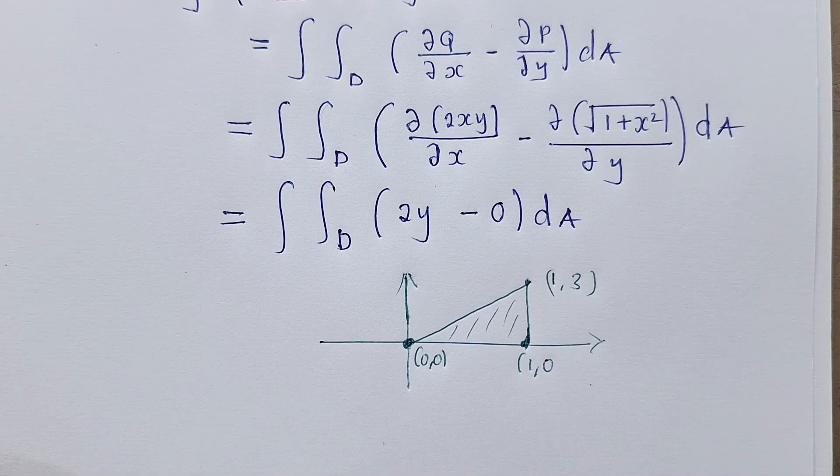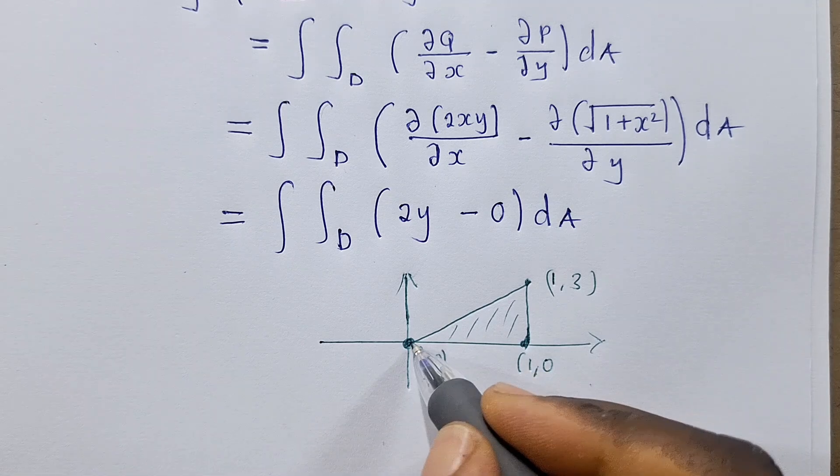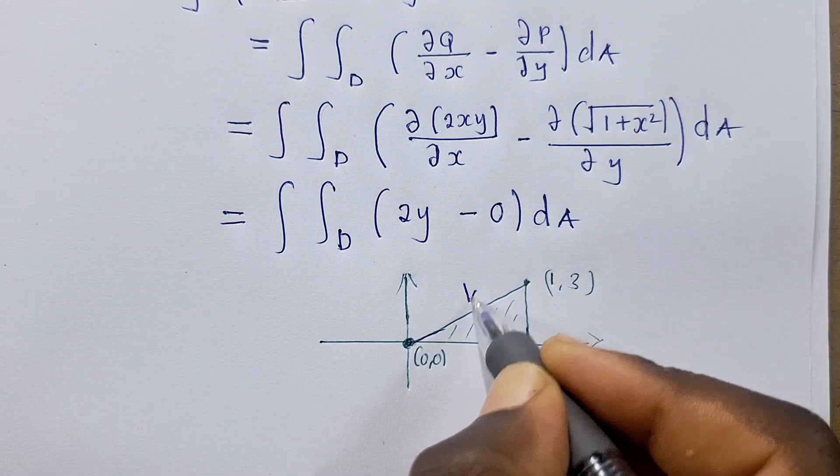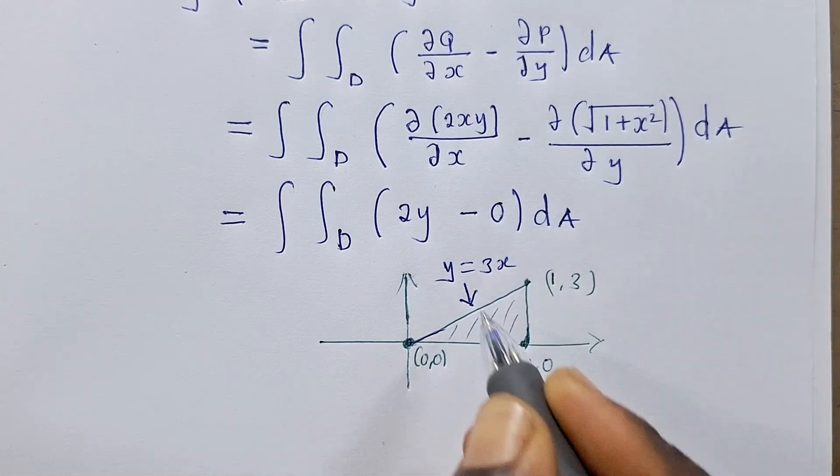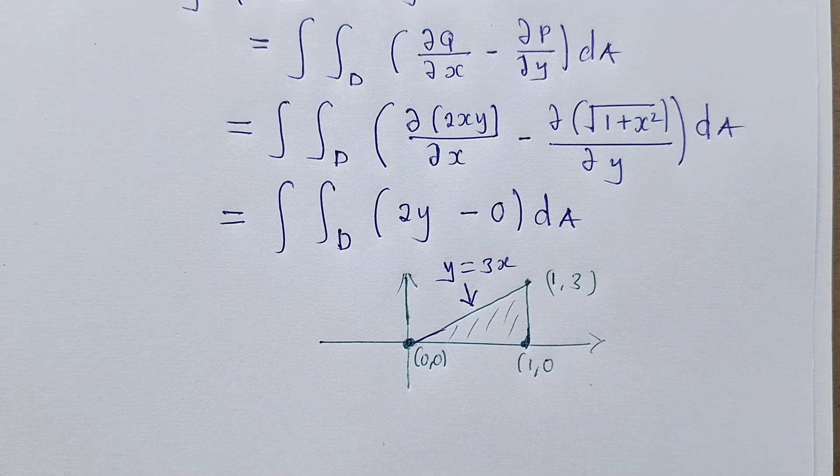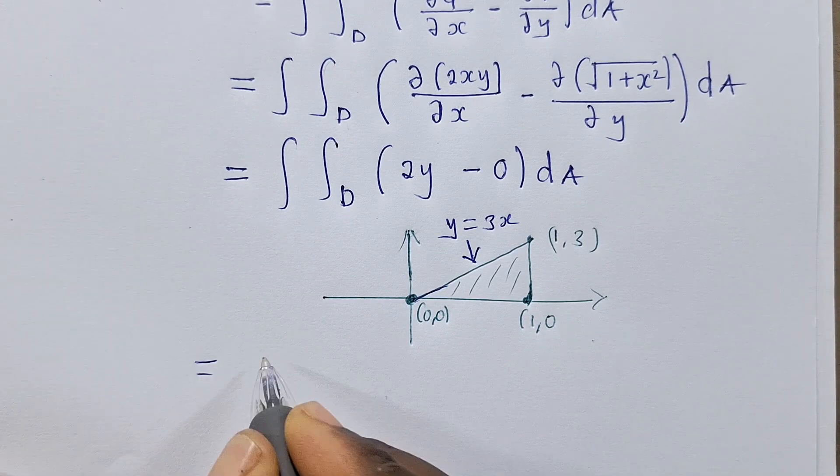What we can do here is to find this equation, the equation of this straight line. When we find that equation, it will be y equals 3x. This will help us now find the region.